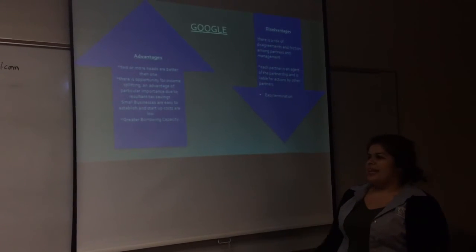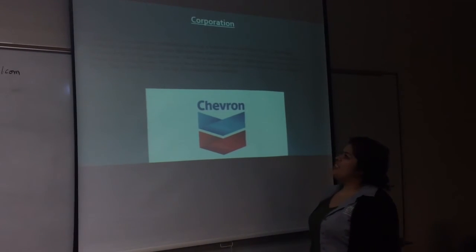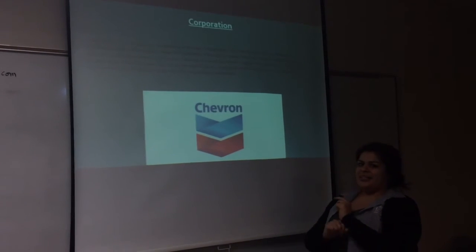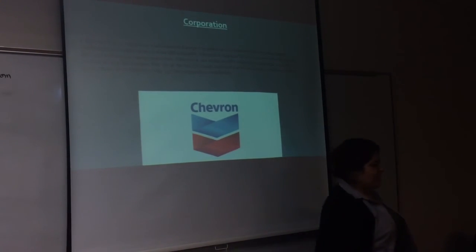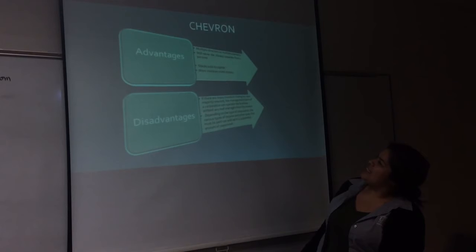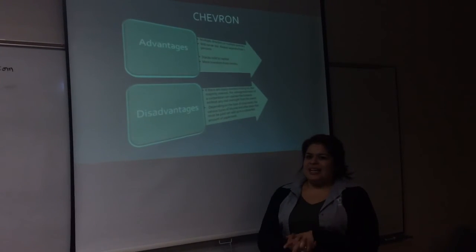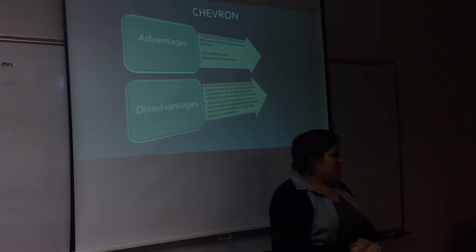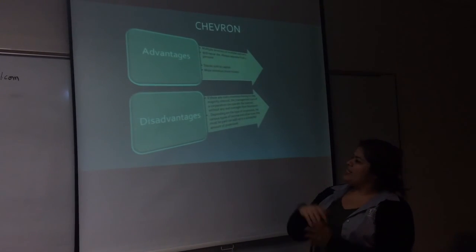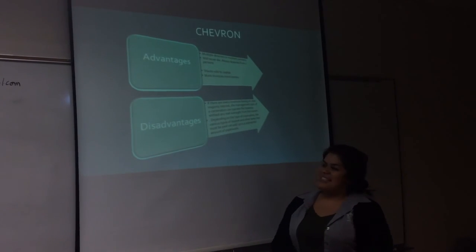Disadvantages would be easy termination from one to another. Another corporation example would be Chevron — a multi-million dollar corporation built on partners, and once again, one of the biggest corporations. Advantages and disadvantages: advantages include multiple directors and multiple proprietors, so there's a lot of people working together as one, which is always successful. Disadvantages include depending on one another to make big decisions, which in some cases is not the best.